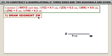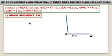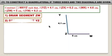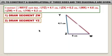Draw the segment ZW of length 5 centimeters using a scale and pencil. Take the distance between the two edges of the compass equal to 4.1 centimeters, because the length of YZ is equal to 4.1 centimeters as given. Mark the arc, then draw the segment YZ. Then draw the segment YW.